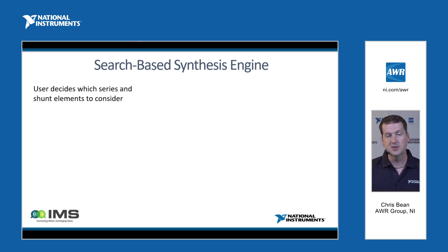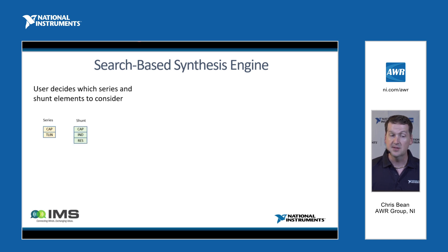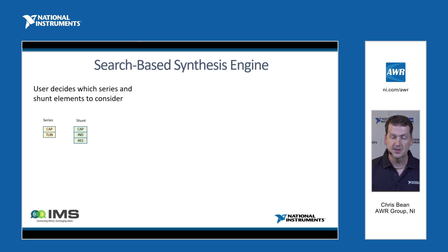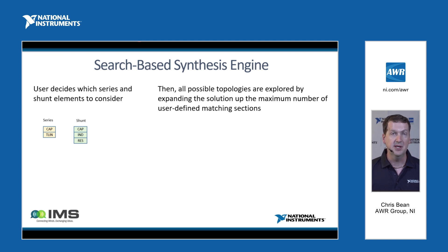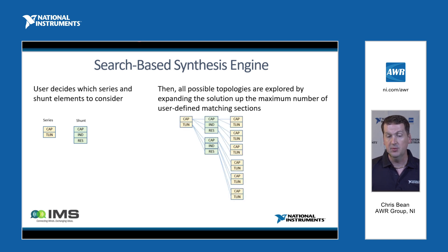Regarding the topology search approach we use: one of the inputs the user has to decide is which elements to use in the series and shunt slots in the matching networks. In a simple example, the designer might select capacitors and transmission lines for the series slots, and capacitors, inductors, and resistors for the shunt slots. Our approach is basically to do an exhaustive search — exploring all possible matching network topologies by expanding the solution stage by stage up to the maximum number of user-defined matching sections.